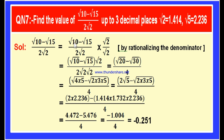If we find the product of the numerators, that is root 10 minus root 15 into root 2, divided by 2 root 2 into root 2. This is equal to root 10 into root 2, which is root 20, minus root 15 into root 2, which is root 30, divided by root 2 into root 2 is 2, and 2 into 2 is 4. Therefore this value is root 20 minus root 30 divided by 4.